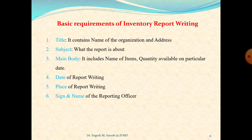On that basis, the company may think whether to purchase new stock as per requirement or not. The fourth point in inventory report writing is date — on which particular date we are writing the report. Equally important is place, the fifth point, meaning from where you are writing the report. And the sixth point is the sign and name of the reporting officer, because who is writing the report is also equally important.